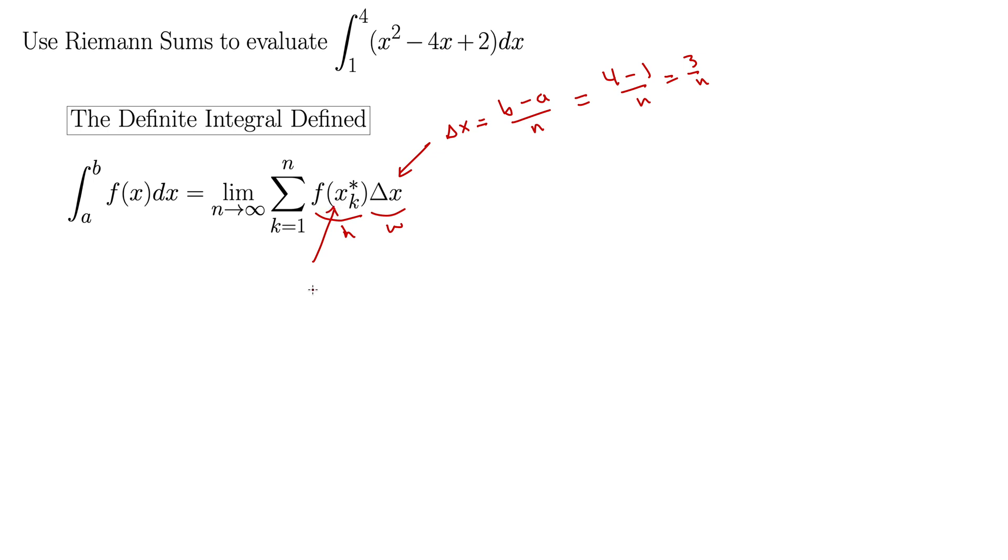Additionally, we'll use right endpoints for xk star because those are usually easier to work with and the star means it doesn't matter where it is in the interval of the rectangle. xk star is always, for the right endpoints, a plus k delta x. But a in our situation is 1 plus k and then delta x we decided was already 3 over n. So we can write this as 1 plus 3k over n. So we have a value for delta x, we have a value for xk star. Now we can get to work computing this integral.